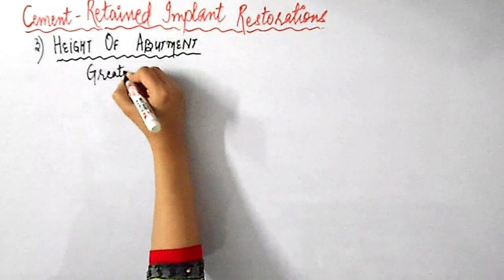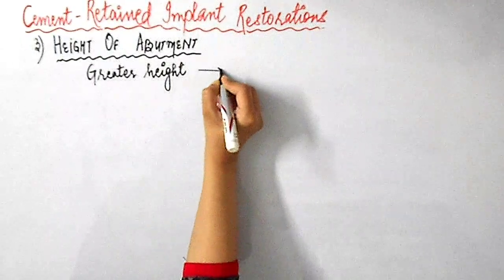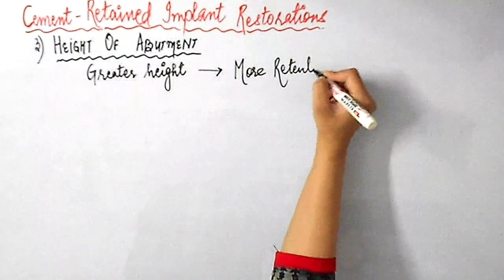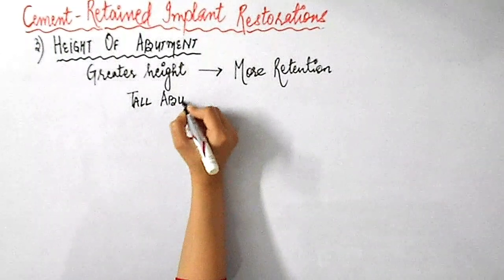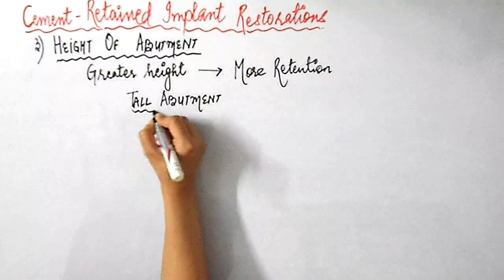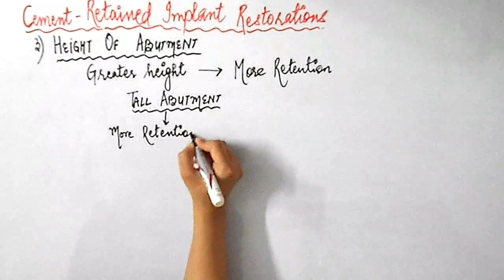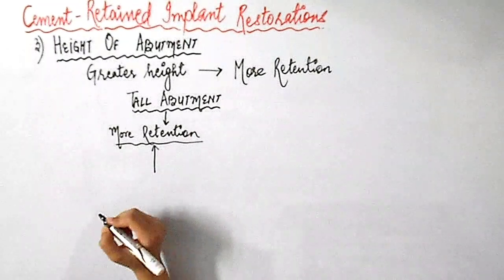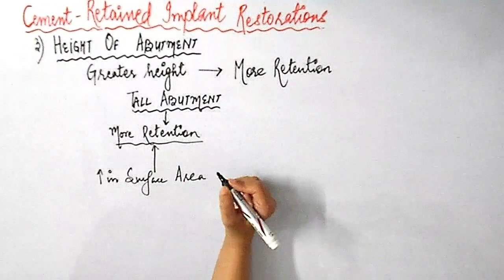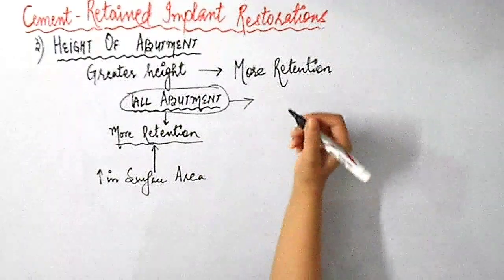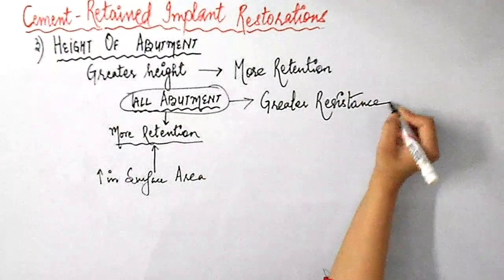The height of the abutment is another factor which influences retention. Greater the height of the abutment, it provides more retention compared to a short abutment. A tall abutment provides more retention because of the increase in available surface area, and the higher the abutment, it also provides greater resistance to lateral forces.